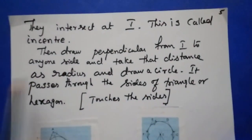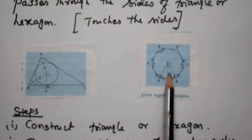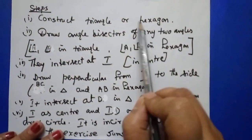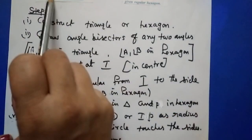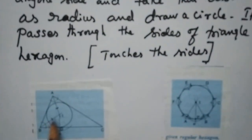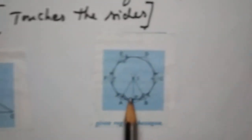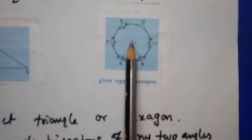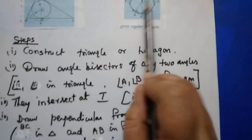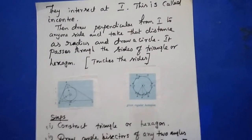To construct the incircle for a triangle or regular hexagon: first, construct a triangle or hexagon. Then draw the angle bisectors of any two angles. For a triangle, draw the angle bisector of angle A and angle B — they intersect at I. This point I is called the incenter, which is the concurrent point of the angle bisectors.